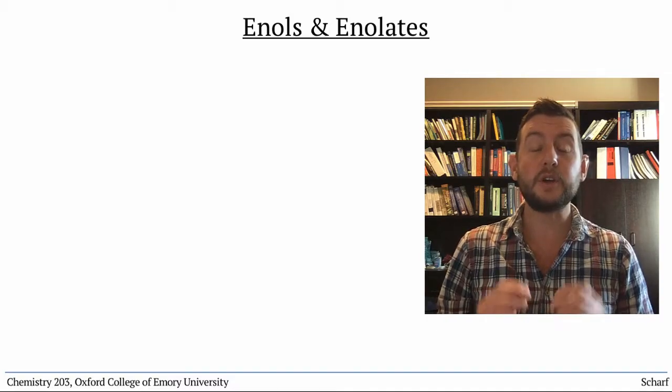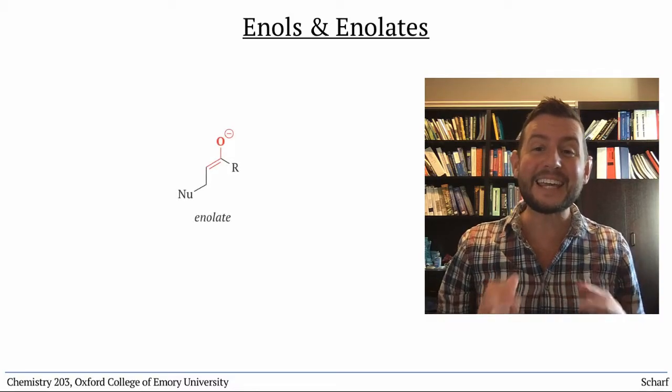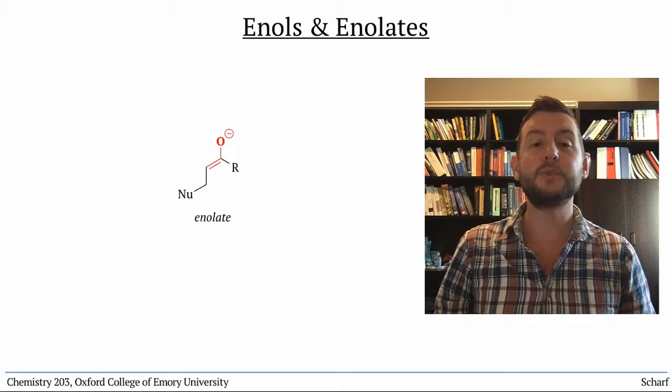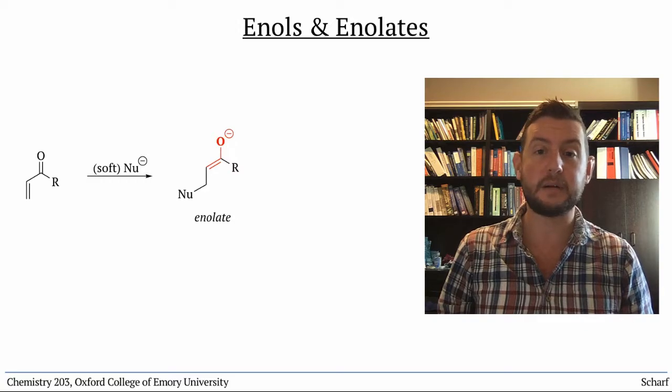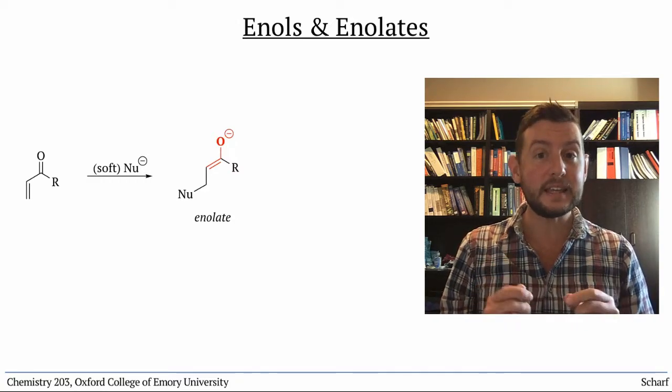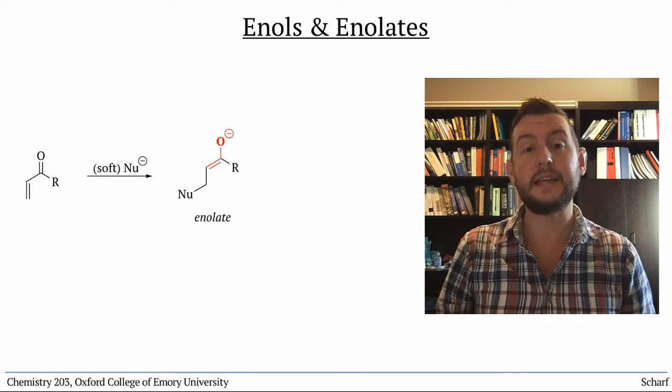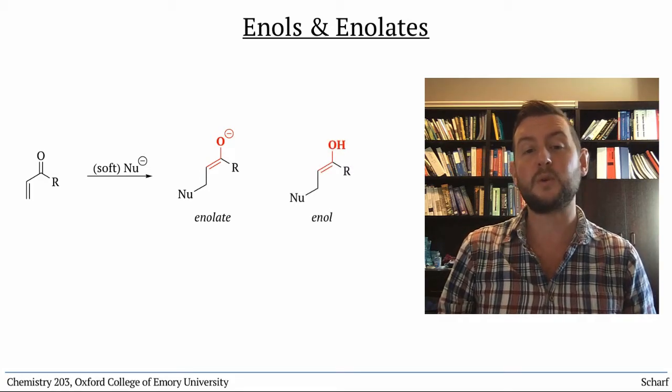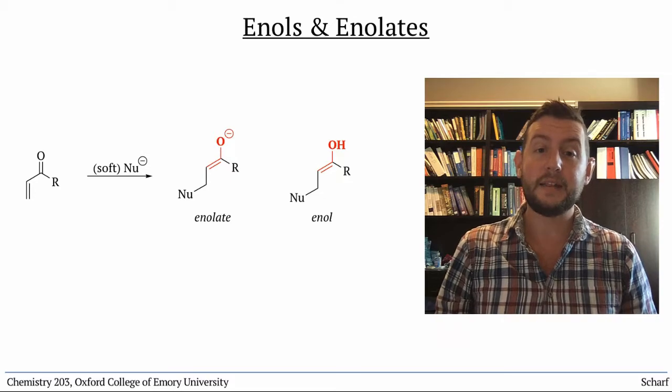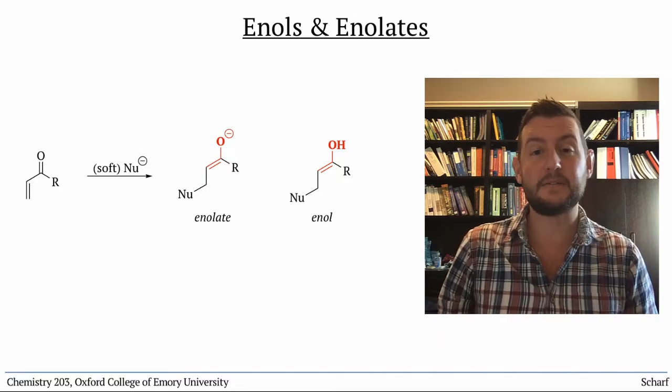In the last module, we encountered a new type of intermediate, an enolate ion, which was formed during conjugate addition to alpha-beta unsaturated carbonyl compounds. These enolates and their protonated counterparts, enols, are extremely important in organic and biochemistry, and their chemistry will be the focus of the next several videos.